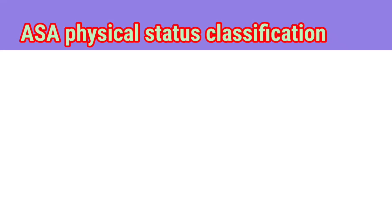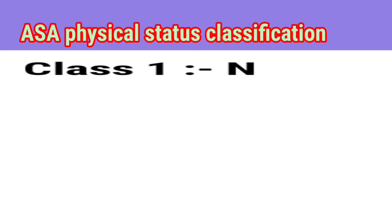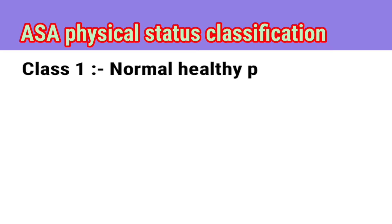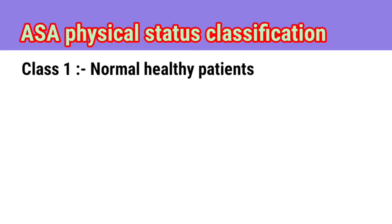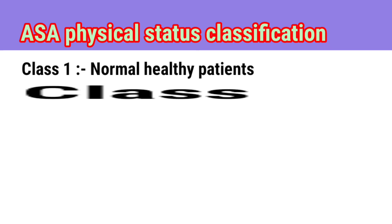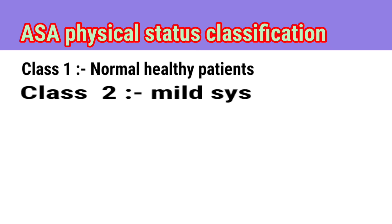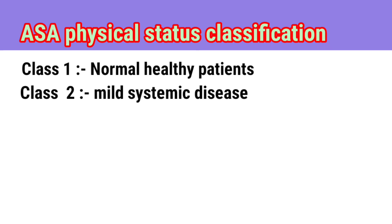ASA Physical Status Classification has six classes. Class 1 is a normal healthy patient. Class 2 is a patient with mild systemic disease, like hypertension.